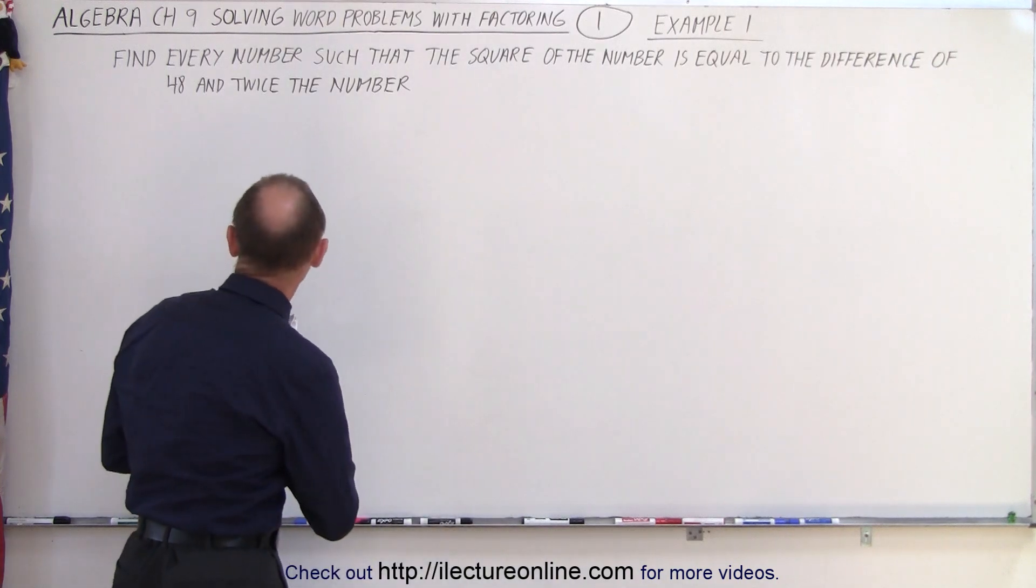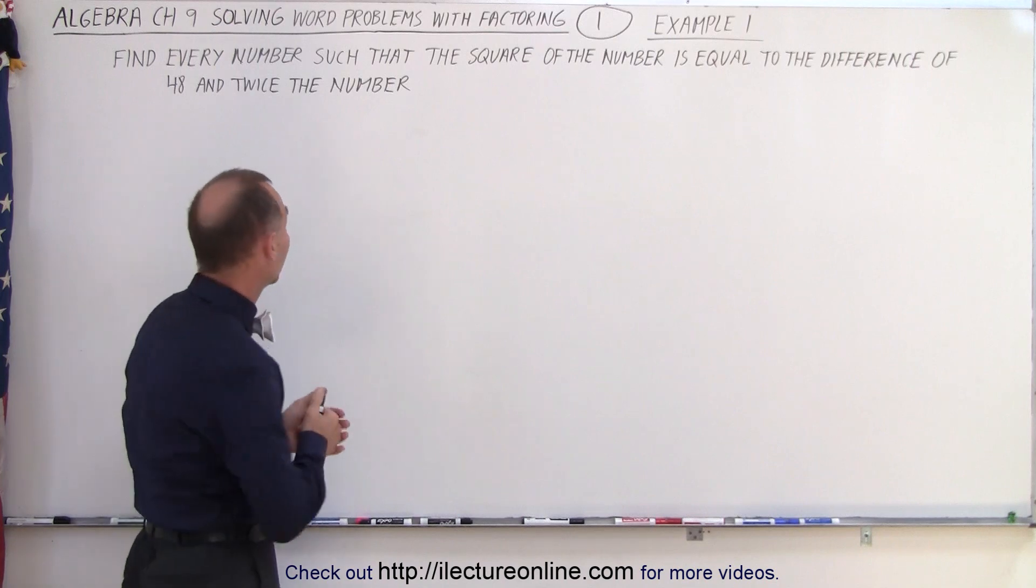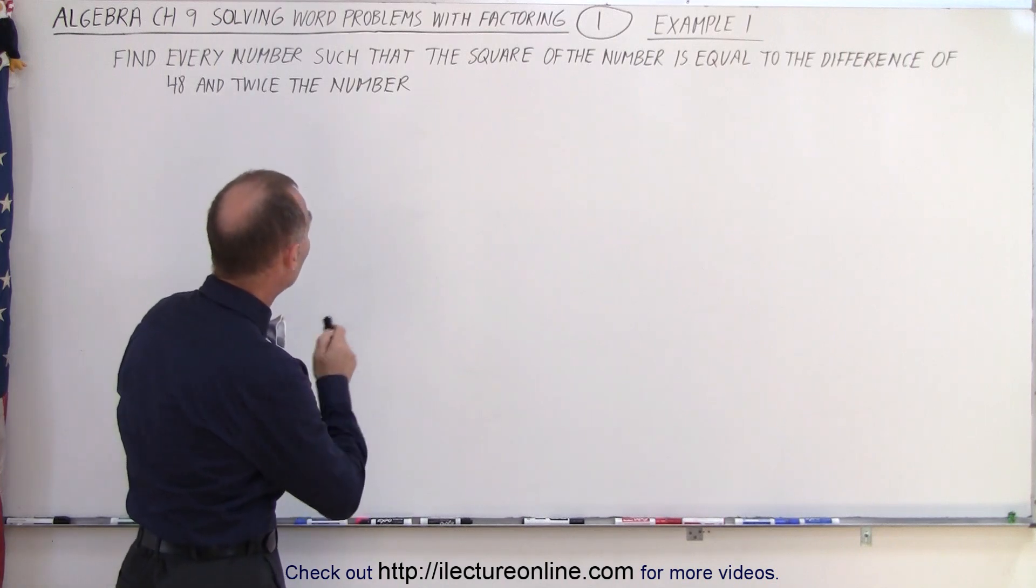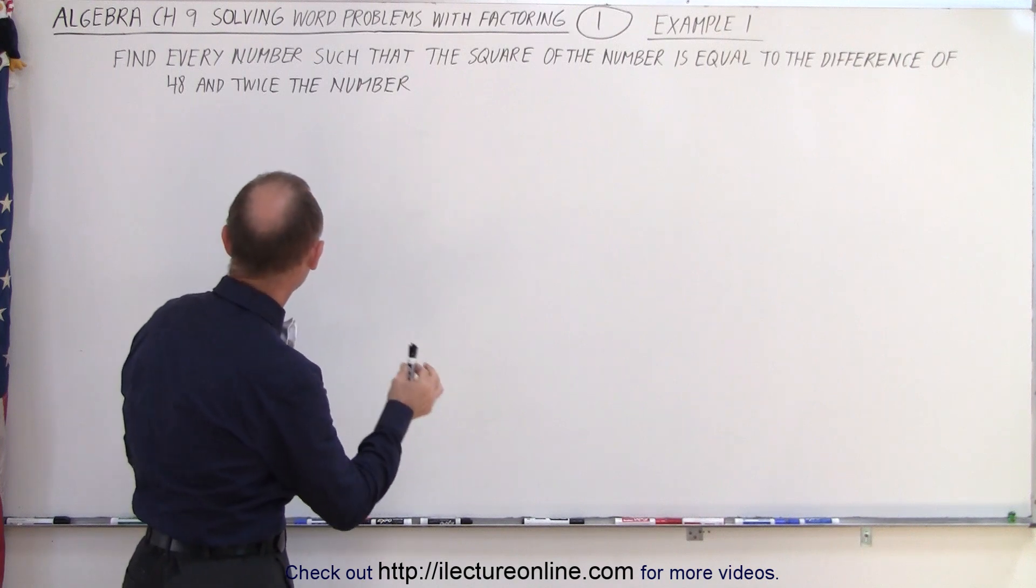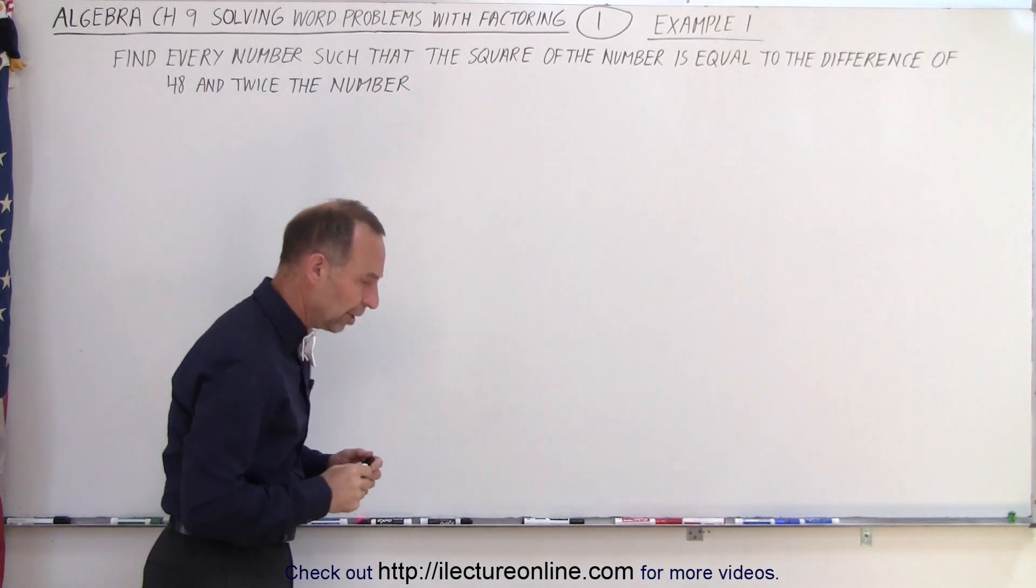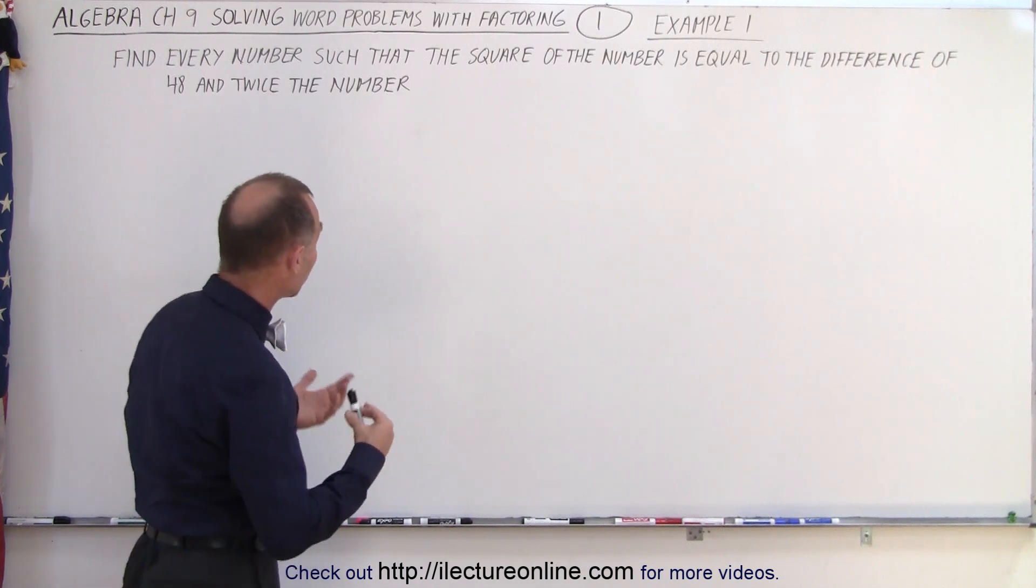Our first one says find every number such that the square of the number is equal to the difference of 48 and twice the number. So we're looking for at least one number, probably more than one.